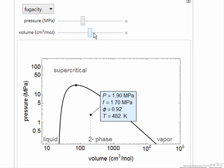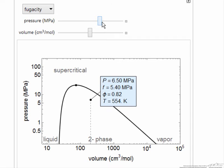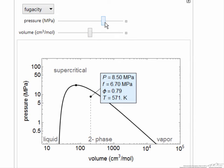If I go back to the two-phase region and raise the pressure, then there's a bigger difference between the fugacity and the pressure. The fugacity coefficient is decreasing, and of course the temperature is increasing as I make this change.